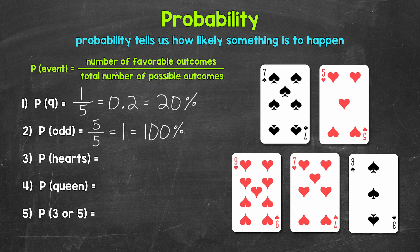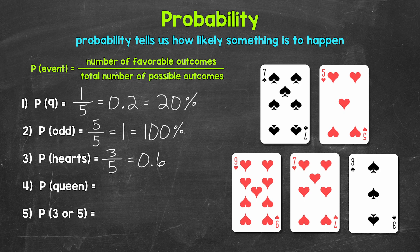Let's move on to number three: what's the probability of picking a card with hearts? There are three cards with hearts, so we have three favorable outcomes — that's our numerator. The total number of possible outcomes is five, since there are five total cards. So our fraction is three over five, three fifths. We have a three out of five chance of picking hearts. Three divided by five gives us 0.6, six tenths. Multiplying that decimal by 100 gives us 60%. That's our probability of picking hearts.